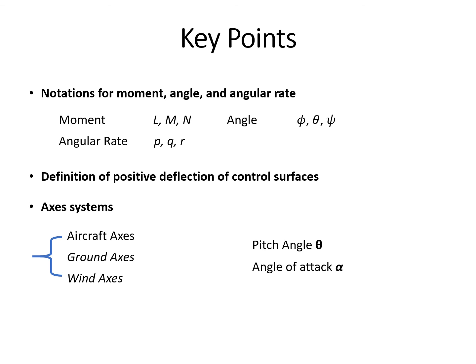We now finish this first mini lecture. The key points are: first, remember the notations for moment, angle, and angular rate; second, remember the definition of positive deflection of control surfaces and the corresponding pilot actions; third, we covered three axis systems — aircraft axis, ground axis, and wind axis. When comparing aircraft axis and wind axis, pay extra attention. We also defined pitch angle theta and compared the relation between theta and alpha in different flight scenarios.